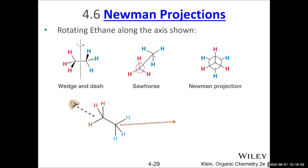Think of the eclipse like a solar eclipse — when the Earth fully blocks the sun, you see only the Earth, and the sun (the other carbon) is hidden behind it. That is the Newman projection. Newman projection is the language of organic chemistry, and you should be very familiar with it. You will have many chances to practice, and the quizzes ask quite a few questions about these structures.